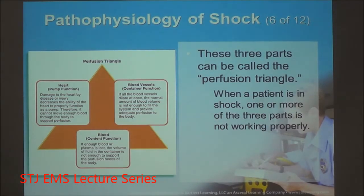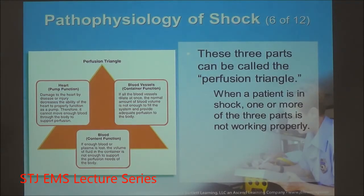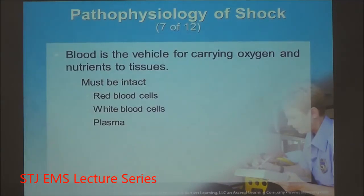The final part of the perfusion triangle is the heart — you've got to have a good pump. Damage to the pump will not allow pressures to be sustained. The primary issue with pump disorder is cardiogenic shock, but this can also be caused by types of obstructive shock.